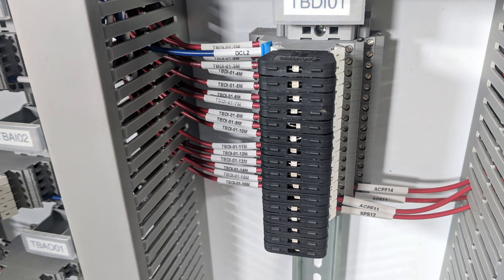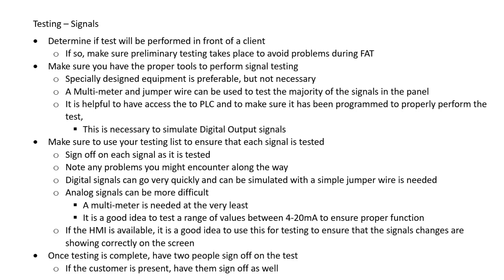With digital signals, you can in many cases simply use a jumper wire connected to power and then touch it to each signal so that you can simulate the on-off state that a digital signal requires. Just using a jumper wire in a lot of cases is acceptable if you don't have any kind of special equipment.